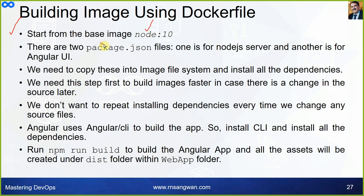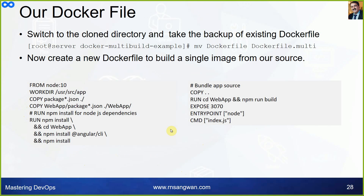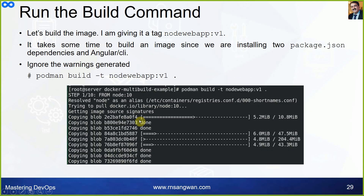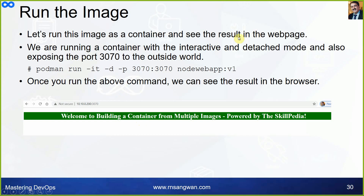To summarize the single-stage Dockerfile: start from the Node base image, copy two package.json files — one for the Node.js server and one for the Angular UI — into the image file system, install all dependencies. This step is done first to build images faster in case source changes later, so we don't repeat installing dependencies every time. Angular CLI is installed, npm run build compiles the Angular app, and all assets are created under the dist folder within the webapp folder.